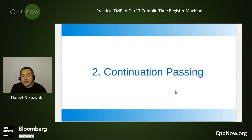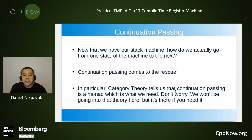On to continuation passing. Now that we have our stack machine, how do we actually go from one state of the machine to the next? This is where continuation passing comes in. In terms of theory, category theory tells us that continuation passing is a monad, which is what we need. I won't be going into those details here, but I wanted to make reference to it for anyone who wanted to look further into that.